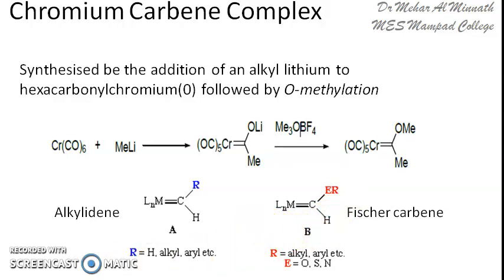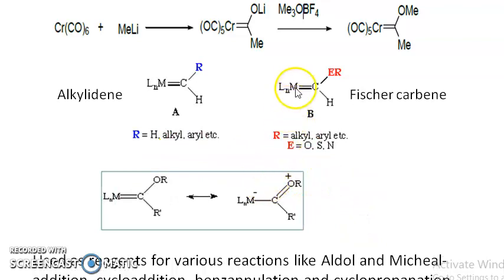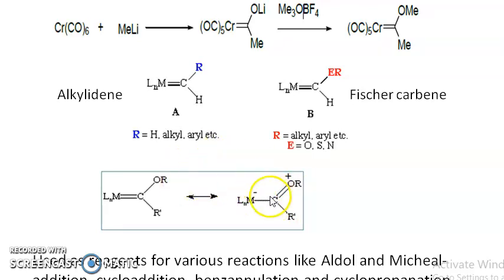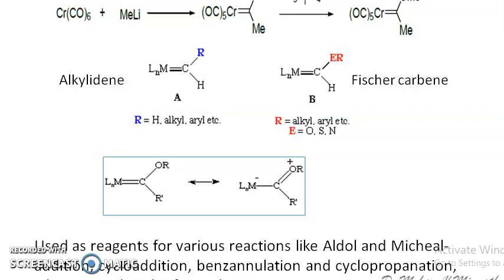The chromium-carbene complex can exist as resonance structures. The metal atom can take up a negative charge and the oxygen can take up a positive charge, giving two resonance structures. The reactions will be based on these resonating structures. The chromium-carbene complex can be used for various reactions like aldol condensation, Michael addition, cycloaddition, benzoannulation, and cyclopropanation — in all of which a new carbon-carbon bond is formed.